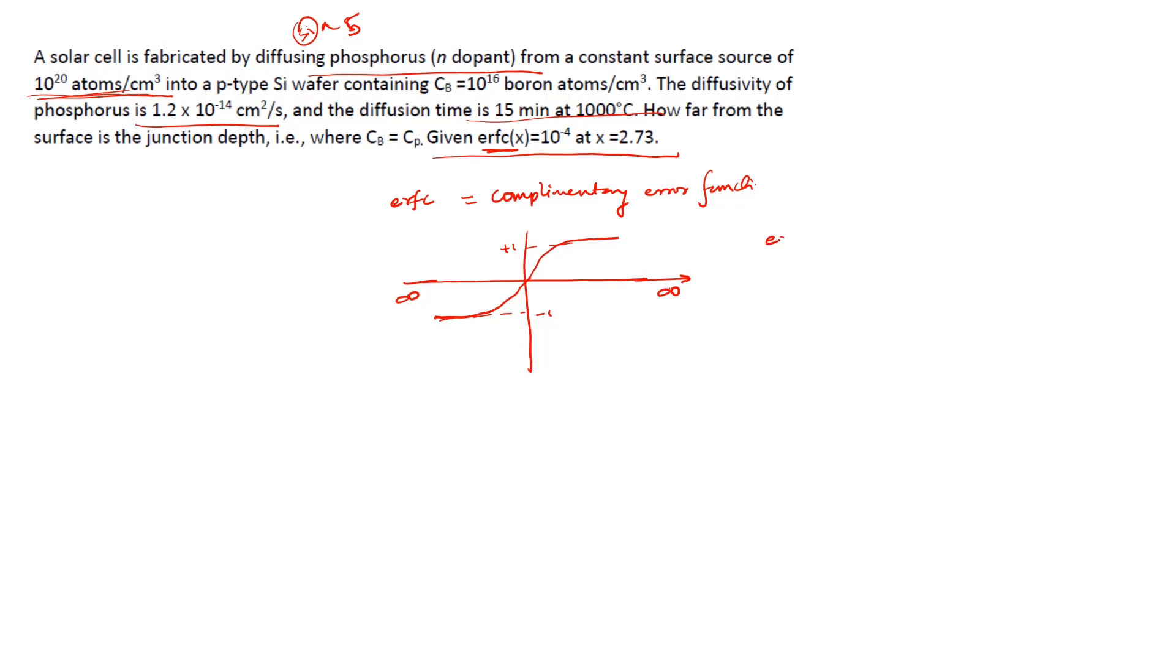When we have error function of something called x and suppose we subtract it with 1, then this is called as error function complementary x. This is nothing but just the complementary function of error function, so that is called as erfc. If they give you erfc, that means you understand that it is basically given 1 minus erf(x).